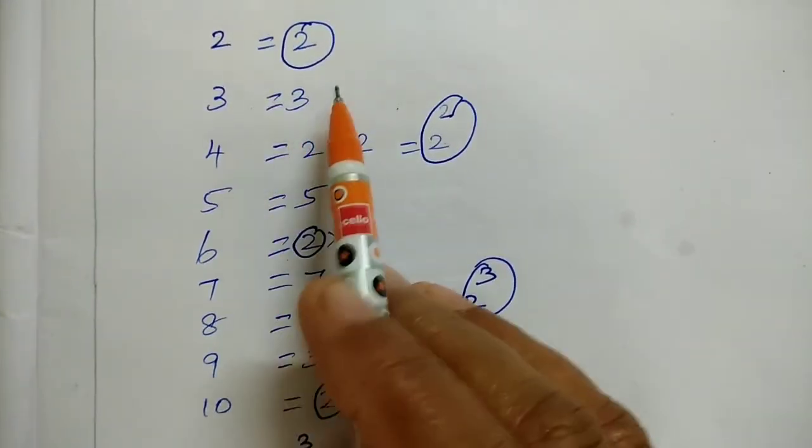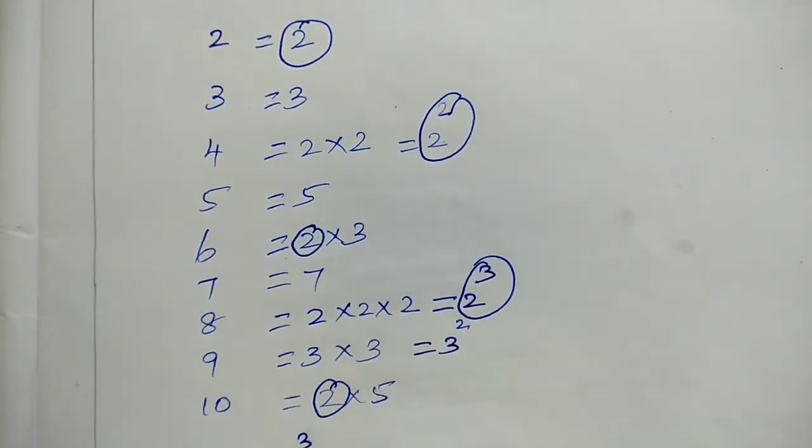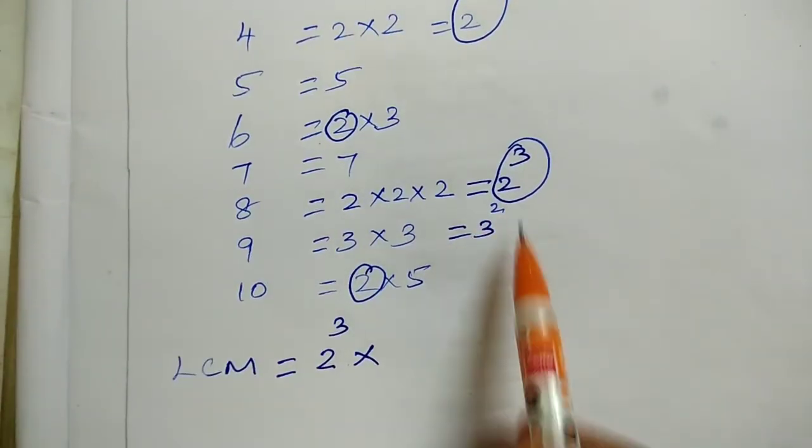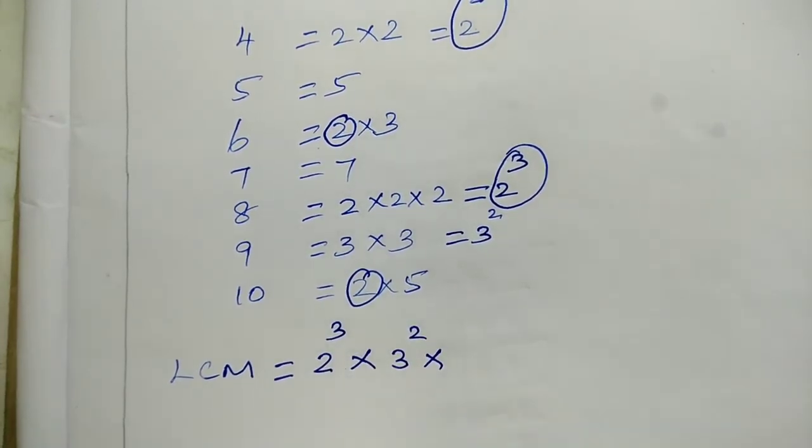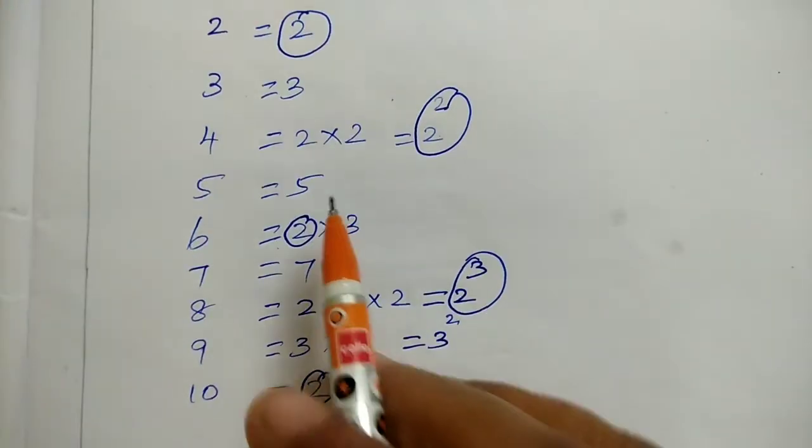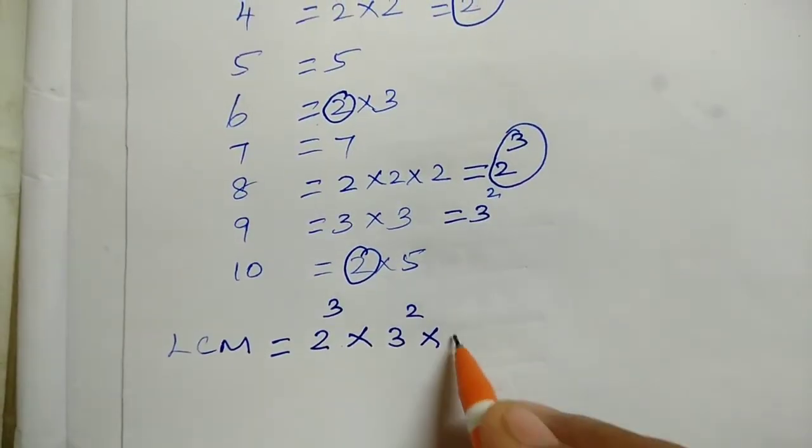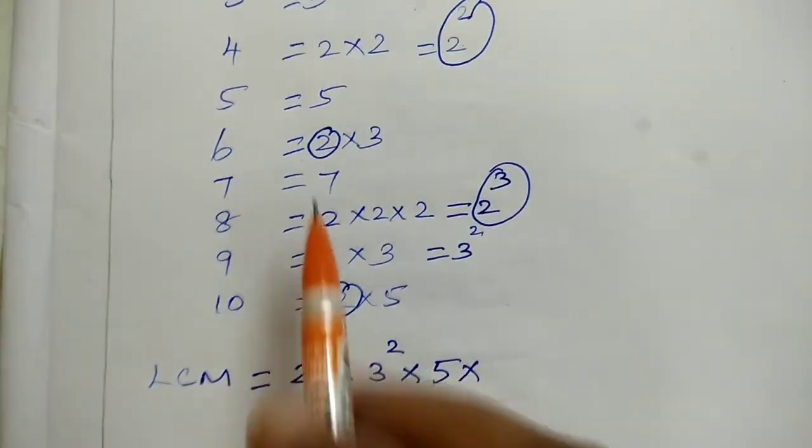If we add 3, there's 3 power 1 here and 3 squared here. We take 3 squared. Next we add 5, which is 5 power 1, so we add 5. Then 7, which appears one time.